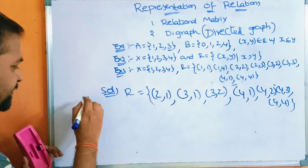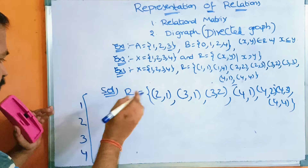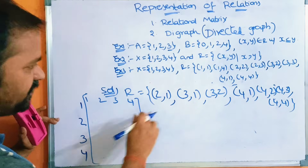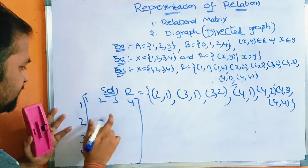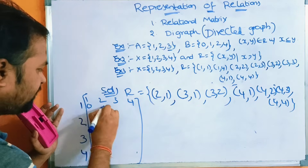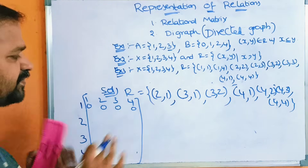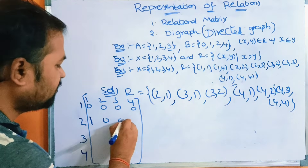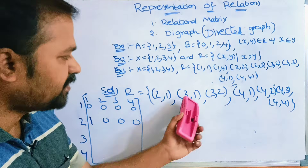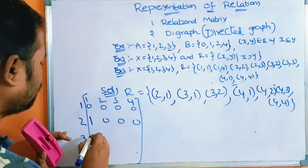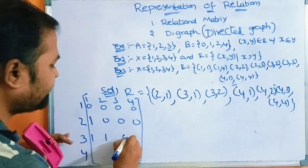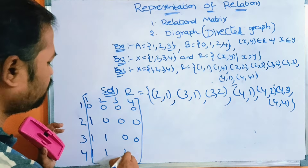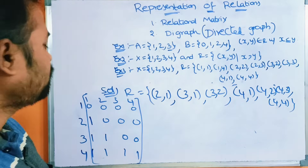For the relational matrix, rows and columns are both 1, 2, 3, 4. From row 1 there are no ordered pairs, so all entries in row 1 are 0. From row 2, (2,1) exists so that entry is 1; the rest of row 2 are 0. From row 3, (3,1) and (3,2) exist, so those entries are 1; (3,3) and (3,4) are 0. From row 4, (4,1), (4,2), and (4,3) exist, so those are 1; (4,4) is 0.